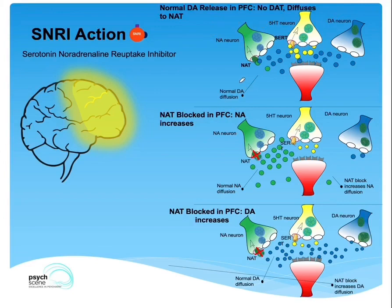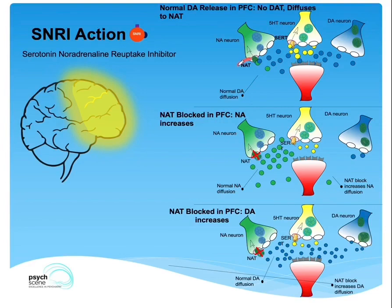What we do know is that from the presynaptic neuron, the neurotransmitter is released. It accumulates in the synaptic cleft and then binds to the receptors in the postsynaptic neuron, resulting in activation and exerts its effect. There are proteins known as transporter proteins that take up these neurotransmitters back into the presynaptic neurons where they're broken down.